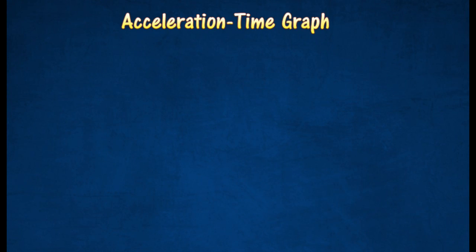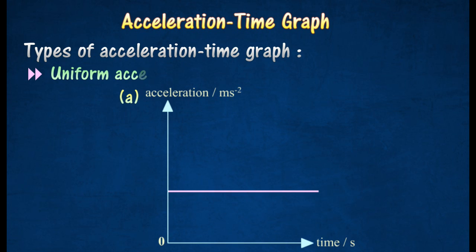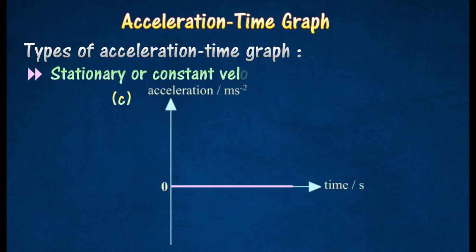An acceleration-time graph is constructed by having the acceleration as the vertical axis and the time as the horizontal axis. Graph A shows that the object is moving at uniform or constant acceleration. Graph B shows that the object is moving at constant deceleration or negative acceleration. Graph C shows that the object is stationary or moving at constant velocity.